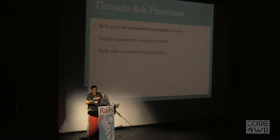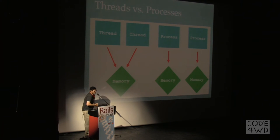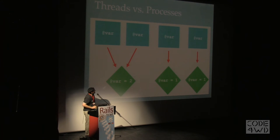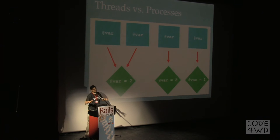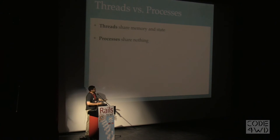Both add overhead to your code — they are not free. The main distinction is that multiple threads will share the same chunk of memory, whereas processes each have their own independent slice of memory. If two threads share a reference to a variable and one thread changes that variable, the other thread will have access to the change. By contrast, if you have two processes and one changes that variable, the other will be unaffected. Threads can communicate with each other very easily because they share memory, but the downside is that threads can step on each other's toes, which is why we talk about thread safety. No one talks about process safety because processes don't interfere with each other — though that is a majorly gross oversimplification. Basically, threads share memory and state; processes don't.